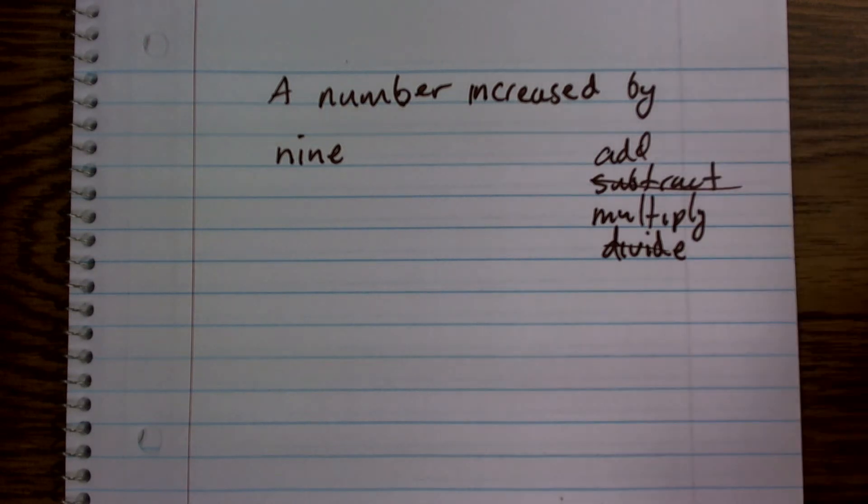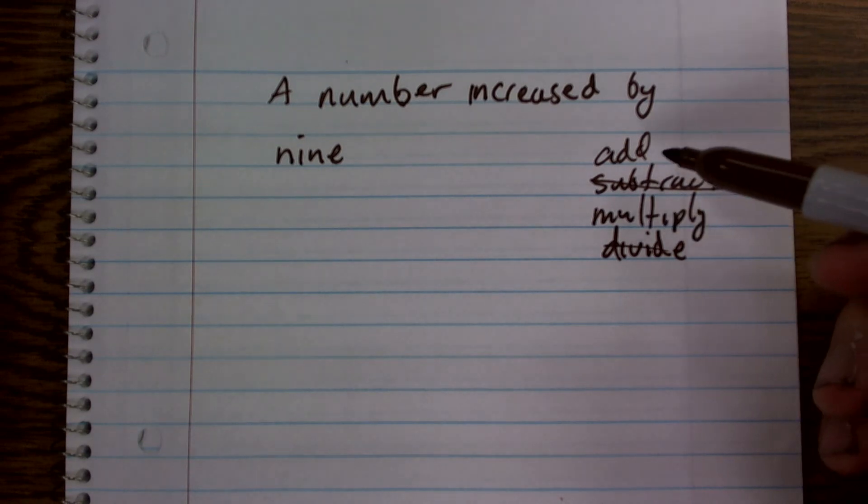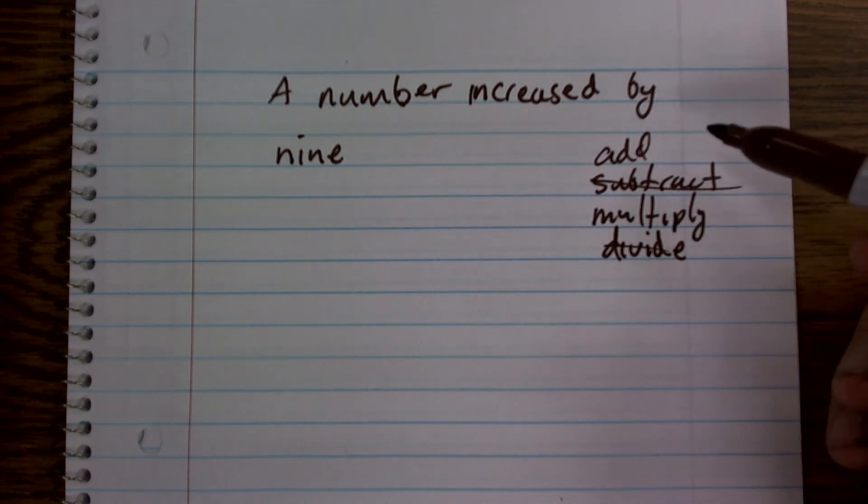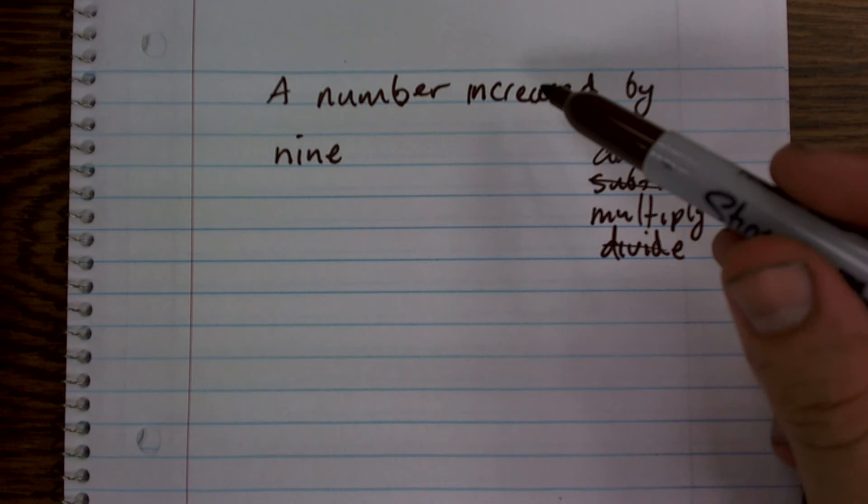Well, how else do we increase things? It's either we're going to add 9 or multiply by 9. Well, I know if I multiply by 9, I'm going to be increasing it by more than actually just 9, typically depending on what my number is.